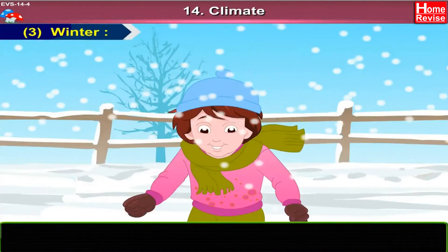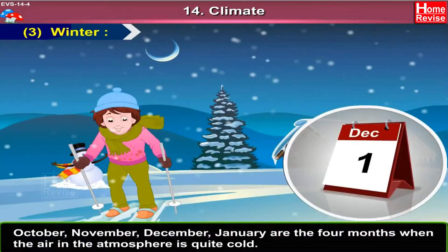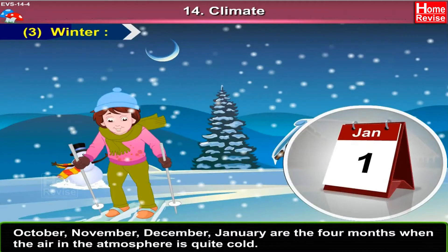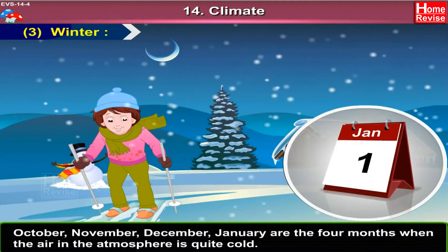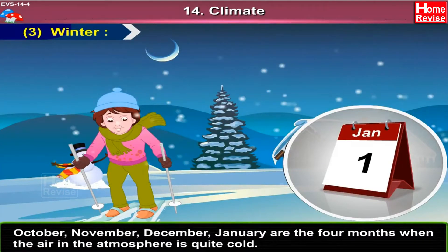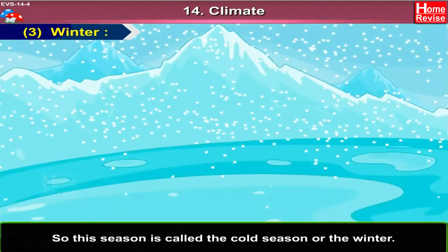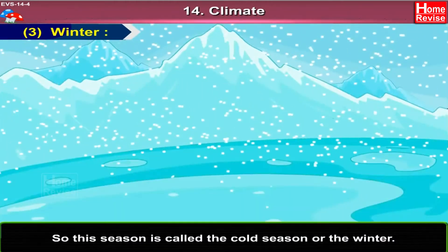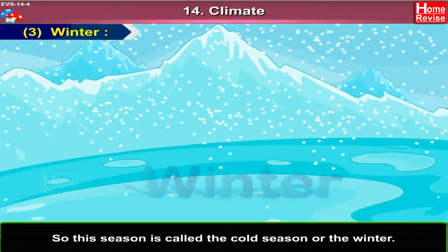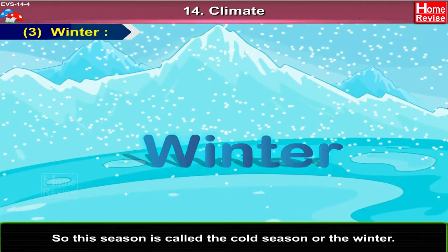Winter: October, November, December, and January are the four months when the air in the atmosphere is quite cold. So, this season is called the cold season or the winter.